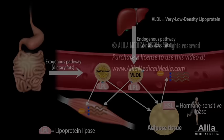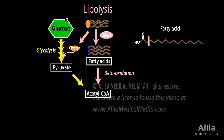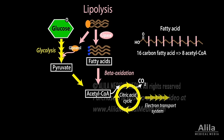Lipid metabolism pathways are closely connected to those of carbohydrate metabolism. Glycerol is converted to a glycolysis intermediate, while fatty acids undergo beta-oxidation to generate acetyl-CoA. Each round of beta-oxidation removes two carbons from the fatty acid chain, releasing one acetyl-CoA, which can then be oxidized in the citric acid cycle. Beta-oxidation also produces several high-energy molecules, which are fed directly to the electron transport system.